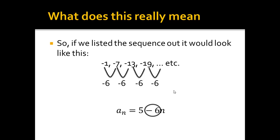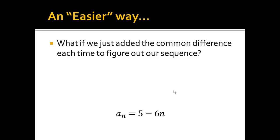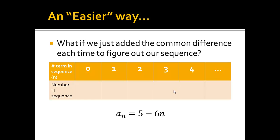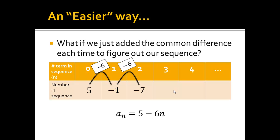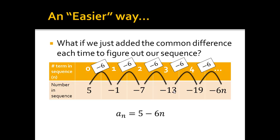Let me show you another way we can do this. What if we just added the common difference each time to figure out our sequence? I've got my table, and I'm starting this off with the zeroth term. The zeroth term is going to be that constant hanging out in the a sub n equation — in this case, 5, because it doesn't have any n's on it. The common difference is minus 6, so I subtract 6 to get negative 1, subtract 6 again to get negative 7, subtract 6 to get negative 13, subtract 6 to get negative 19.